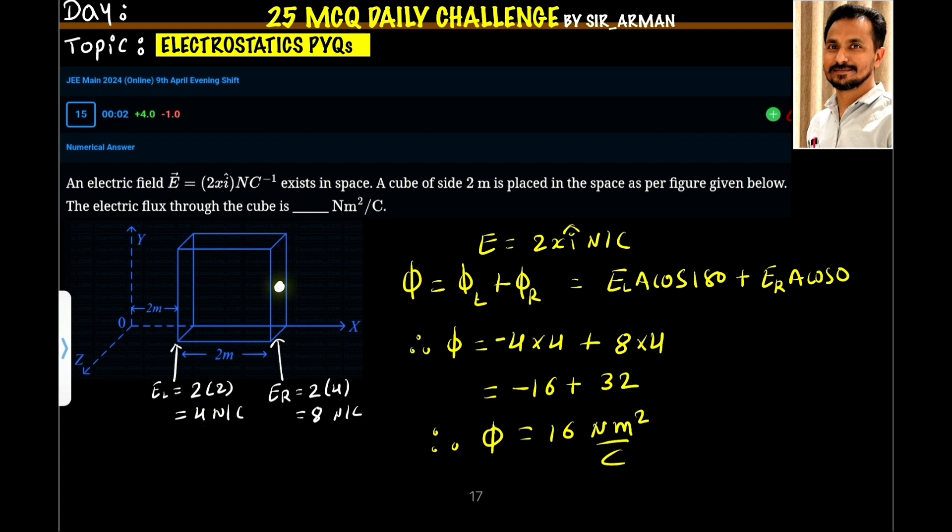At this point, this face is lying at a distance 4 meters—2 plus 2. So the electric field at the right face is 2 times 4, which is 8 Newtons per Coulomb. A cube of side 2 meters is placed in space as per the figure given below. Find the electric flux through the cube.